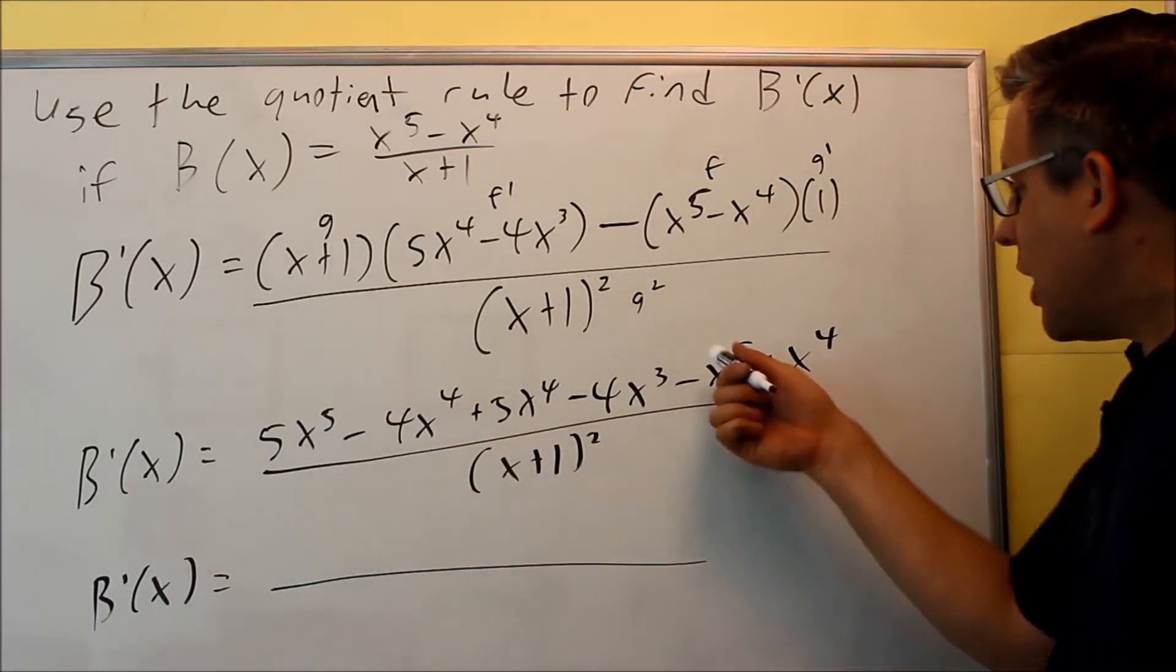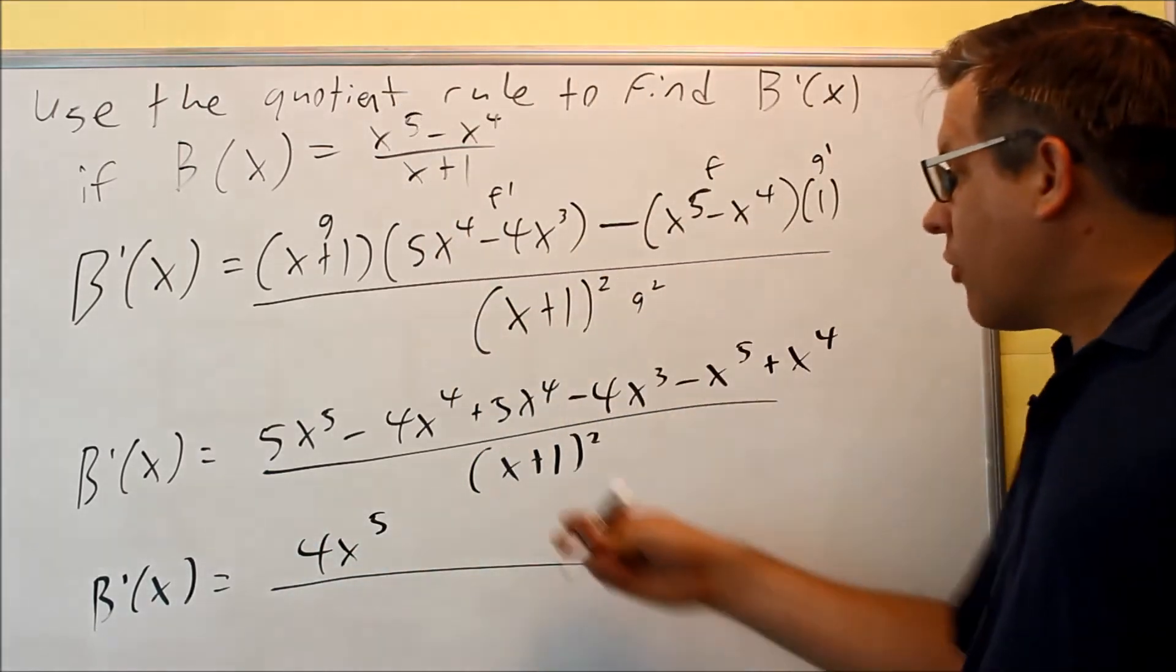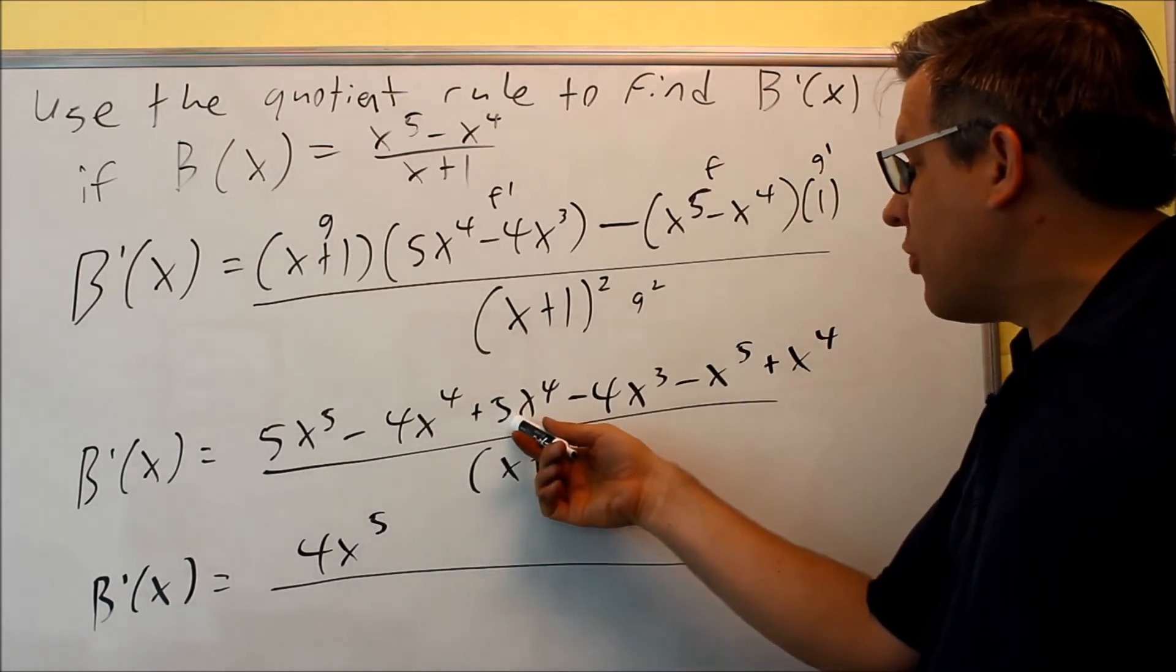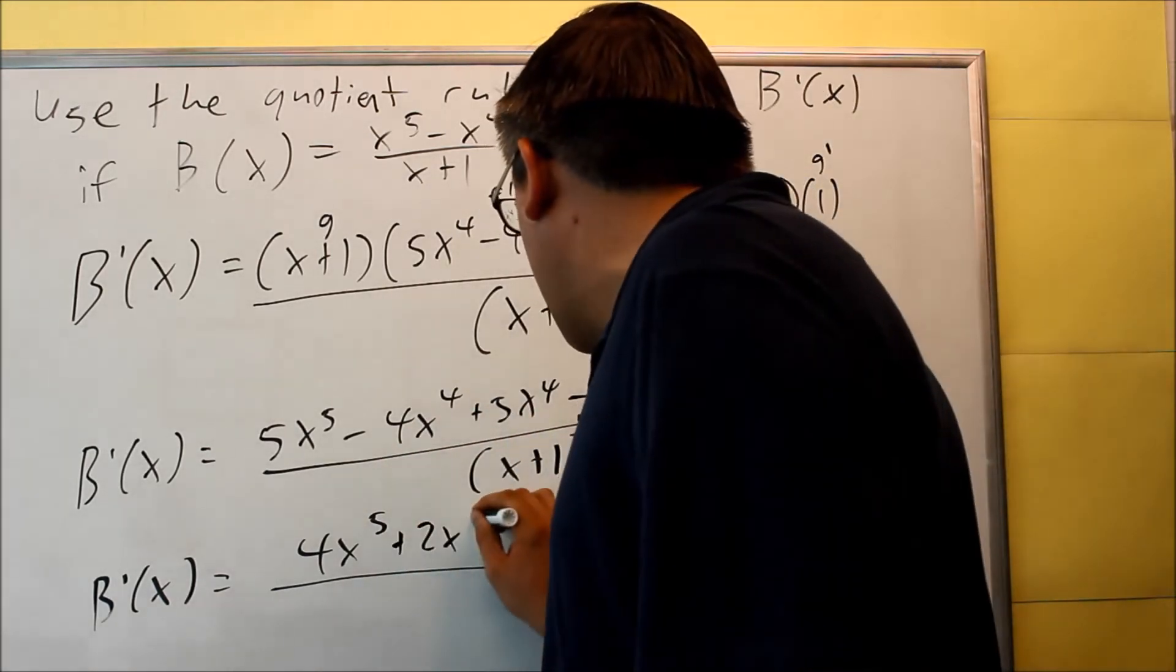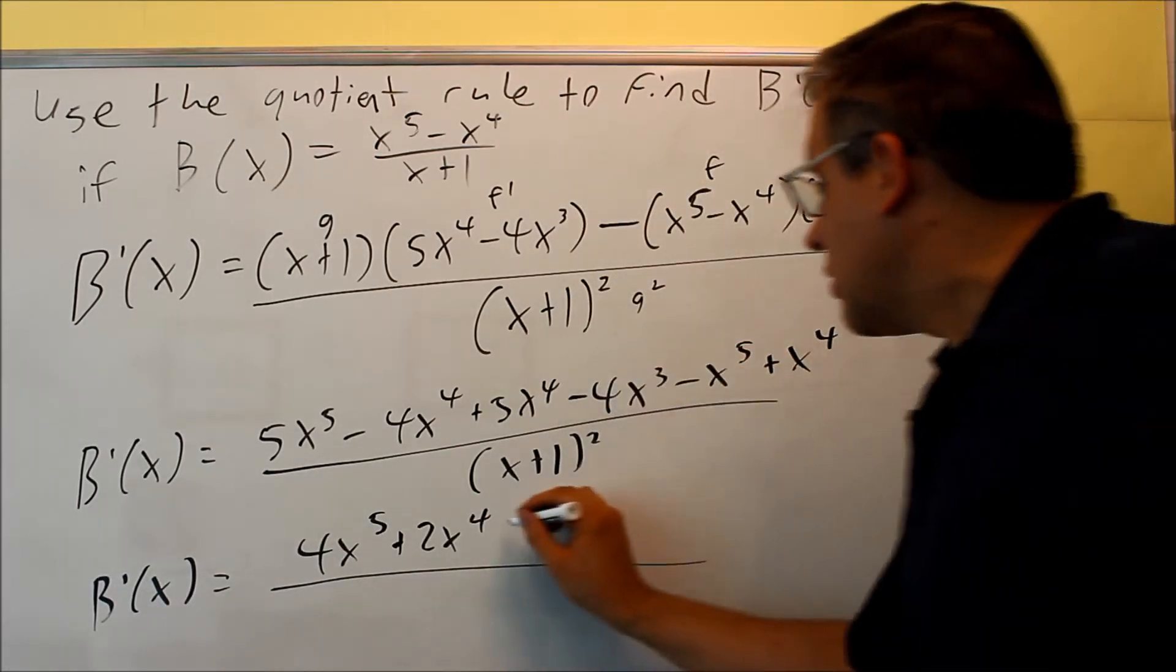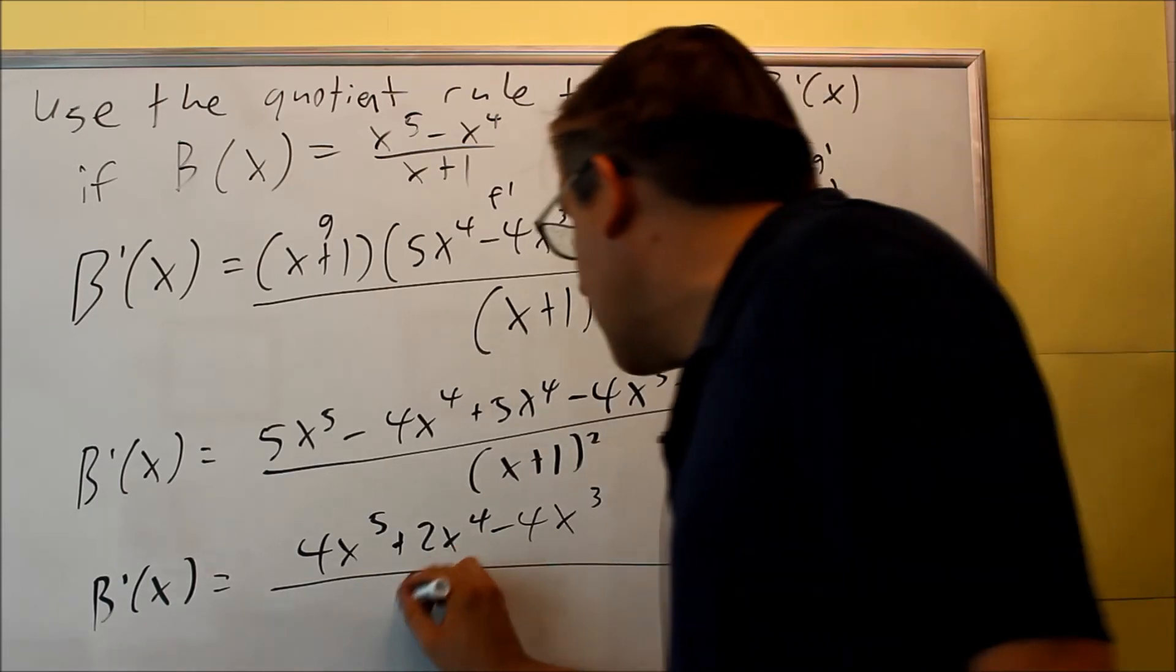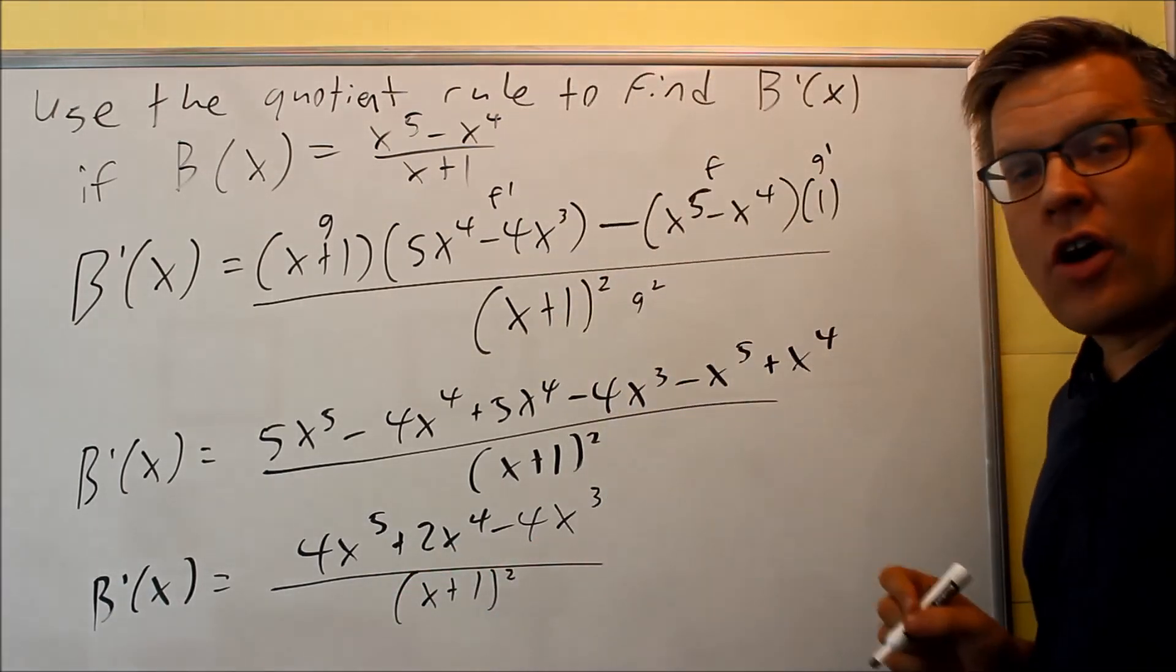5x to the fifth minus x to the fifth is 4x to the fifth. Then we have the fourth powers. Minus 4 plus 5 is 1. And then plus the 1 over here gives you 2x to the fourth. And the last term that we have is minus 4x to the third. And then we just take that and write it over x plus 1 squared. And then that's as far as you can go.